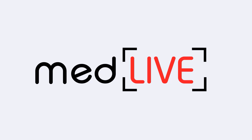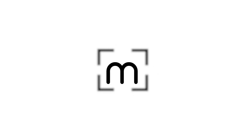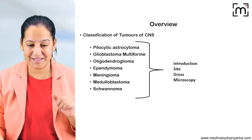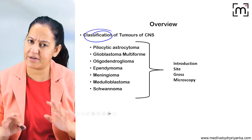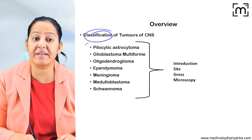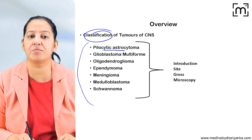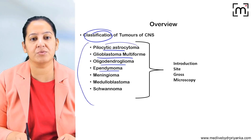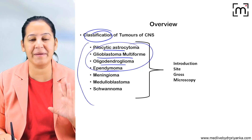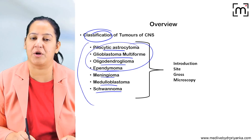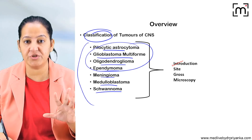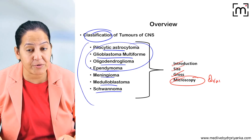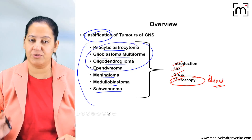Let's start tumours of the CNS. First I will give you the classification of tumours of the central nervous system — write down the complete classification. From that classification we pick the seven important ones: pilocytic astrocytoma, then type four astrocytoma that is glioblastoma multiforme (GBM), then oligodendroglioma and ependymoma — these are all the gliomas. Then meningioma, medulloblastoma, and schwannoma. For each you need to understand the introduction, the most common site in the brain or spinal cord, the gross, and importantly the microscopy, which you must draw with proper labelling in your exam.